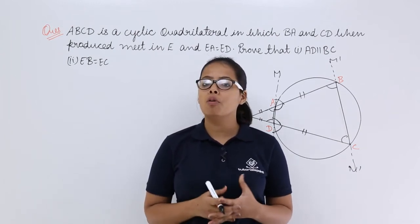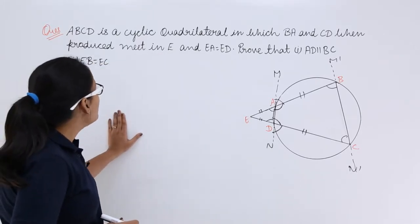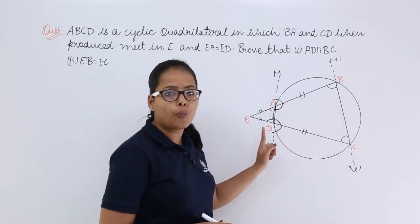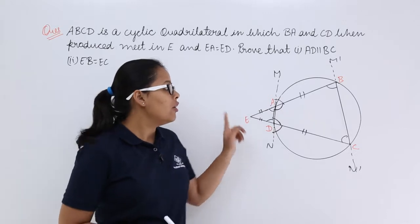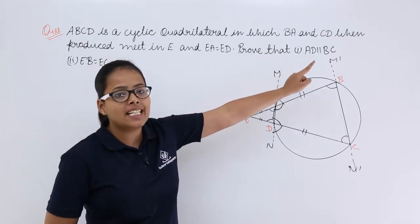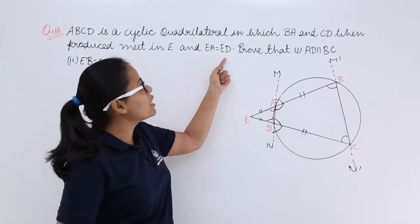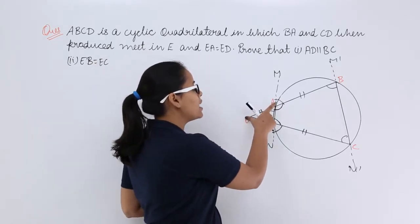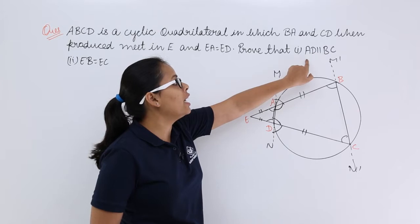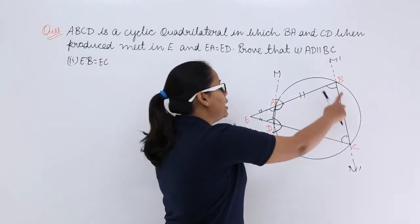Hello guys, let's discuss this problem on circles from R.D. Sharma where ABCD is a cyclic quadrilateral — all four points lie on the perimeter of the circle. When joining these four points you make a cyclic quadrilateral in which BC and CD when produced further meet at point E, and EA is equal to ED. You need to prove that AD is parallel to BC, and that EB is equal to EC.